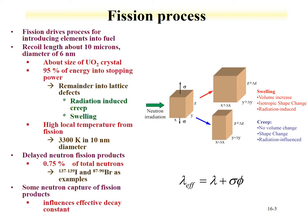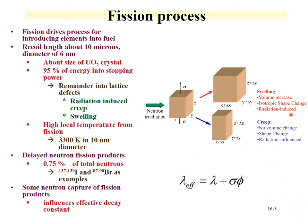We already talked about Frenkel pair production, and there are some effects of this process on materials. One is radiation-induced creep, where there is no volume change but there is a shape change - something can elongate. For instance, uranium metal in cladding could elongate and breach the top of the cladding. Another effect is swelling, which is a volume increase. Within the lattices, defects would increase in size and swell the material.